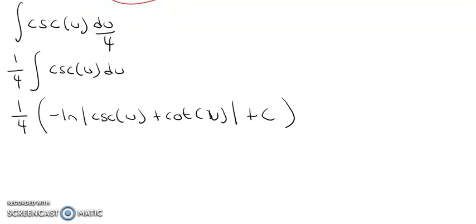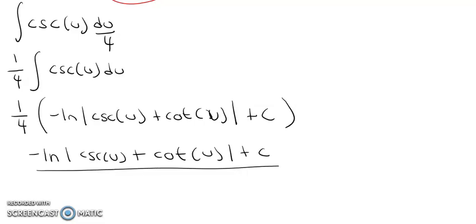So now we're going to multiply all of this by 1 over 4. So we get the negative natural log of cosecant u plus cotangent u, and then plus c, and that's all over 4.